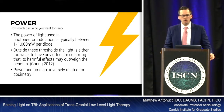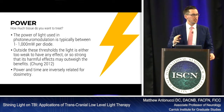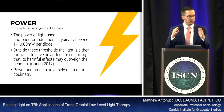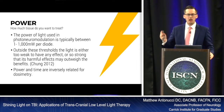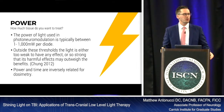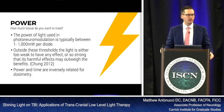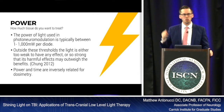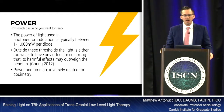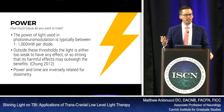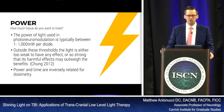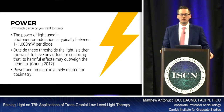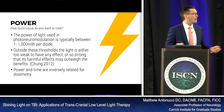Now, power — how much tissue do we want to treat? The power of light used in photoneuromodulation is roughly one milliwatt to 1,000 milliwatts per diode — a one milliwatt to one watt spectrum. Outside these thresholds, the light is either too weak to have any effect or so strong that harmful effects may outweigh the benefits. This is from Chung, 2012.